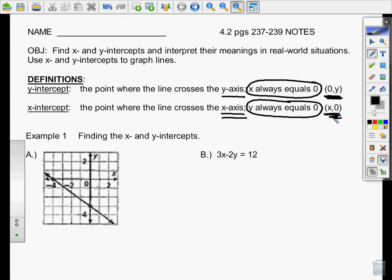All right, let's take a look at example one. We're going to find the x and y intercepts first from the graph given in letter A, and then from an equation in standard form in letter B. So let's take a look at letter A. Do you see the line that's on your graph? I'm going to highlight it right now so you can see it really good.